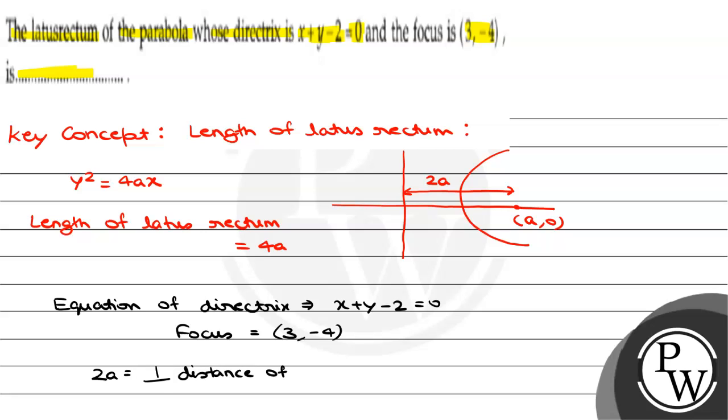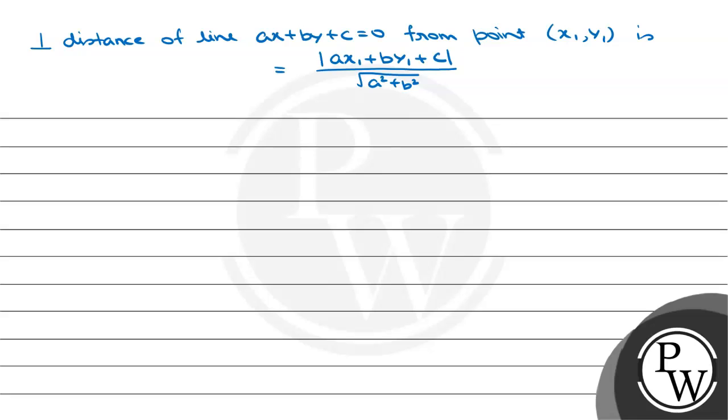Let's find out the distance of the directrix from the focus. Let's look into the formula. Perpendicular distance of line ax plus by plus c equals 0 from point (x₁, y₁) is given by mod of (ax₁ plus by₁ plus c) upon square root of (a squared plus b squared). Using this formula, we can find out this length.